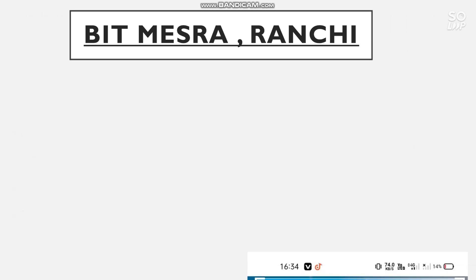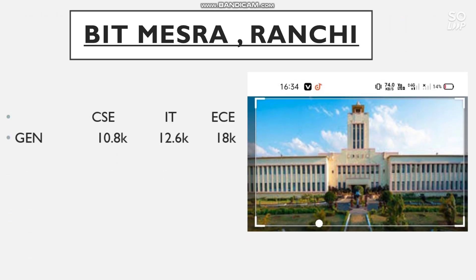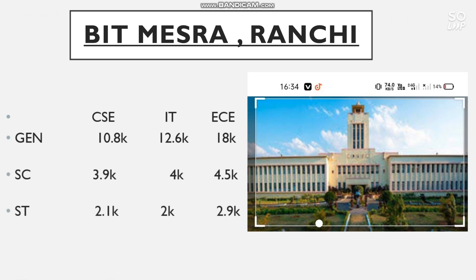Number 2 is BIT Mesra. Cutoff for CS, IT, and EC: General — CS 10,800, IT 12,600, EC 18,000. I will make separate review videos for all GFTIs covering average package, highest package, fees, college atmosphere, and placement records. For SC — 3,900, 4,000, and 4,500; ST — 2,100, 2,000, and 2,900; EWS — 2,100, 1,700, and 2,200. There is no OBC reservation in this GFTI.